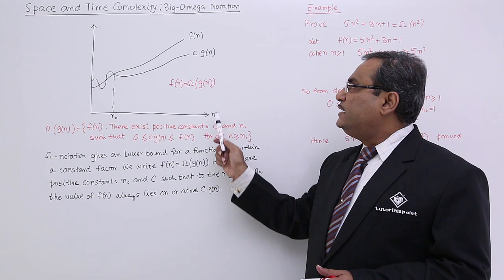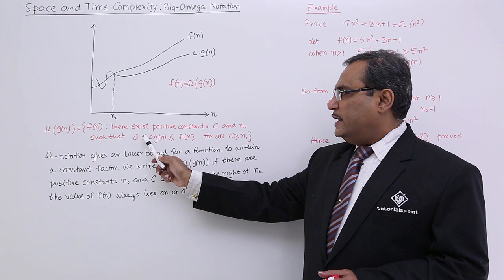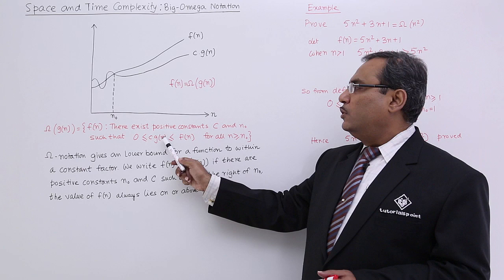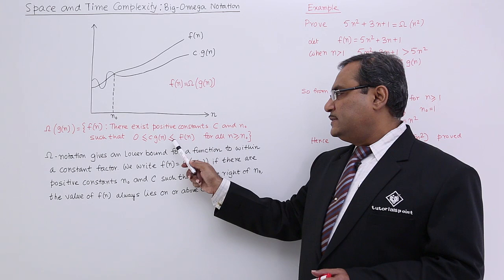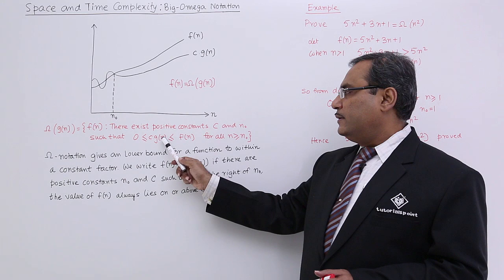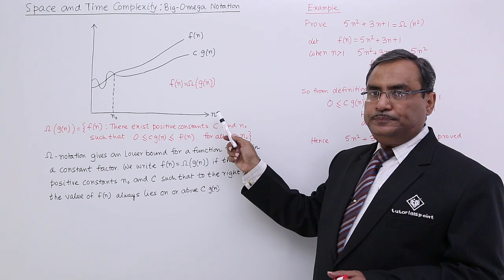There exists positive constants c and n0 such that 0 is less than or equal to c into g of n, which is less than or equal to f of n. Because f of n will have the lower bound that is c into g of n, for all n greater than equal to n0.